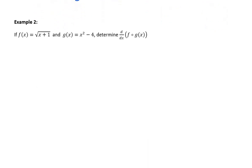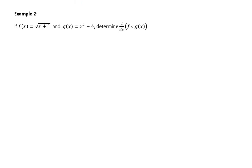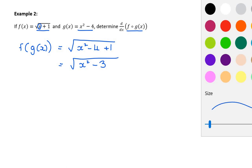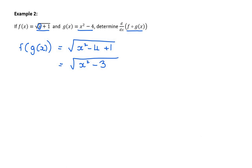Before we start mixing all the rules, here's one last chain rule example. Example 2: given f(x) = √(x + 1) and g(x) = x² − 4, find the derivative of f(g(x)). First, what is f(g(x))? The outside function is f, so instead of writing x we write x² − 4: that gives √(x² − 4 + 1) = √(x² − 3). This tests whether you can identify and construct a composite function.